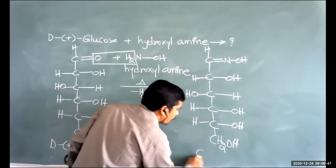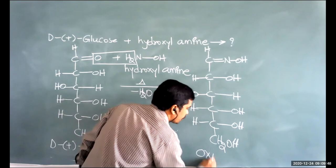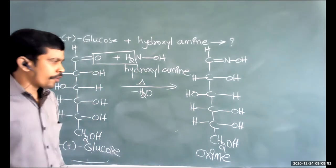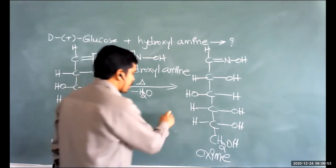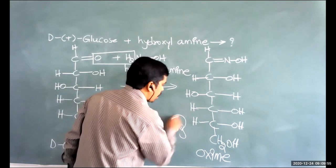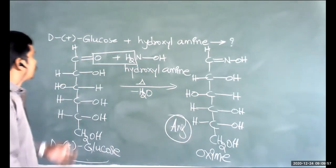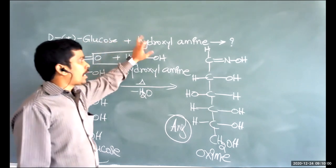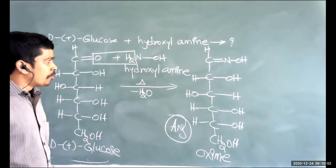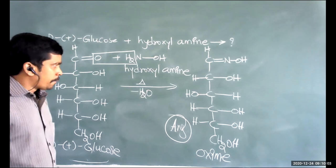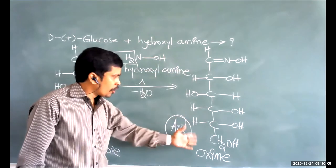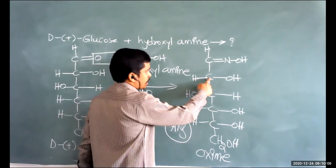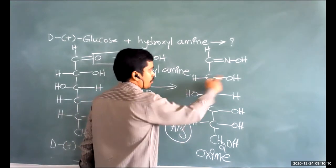D+ glucose contains the aldehyde group C=O-H, so it is an example of aldose. It contains six carbons, so it is a hexose. Therefore D+ glucose is an aldohexose. The aldehyde group can reduce Tollens' reagent, so D+ glucose is also an example of a reducing sugar.